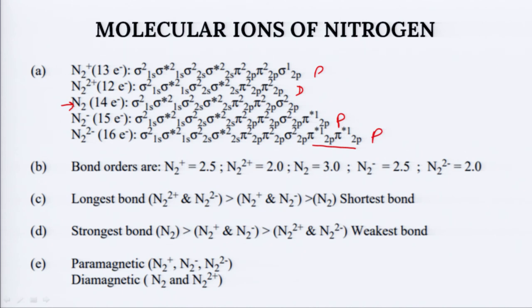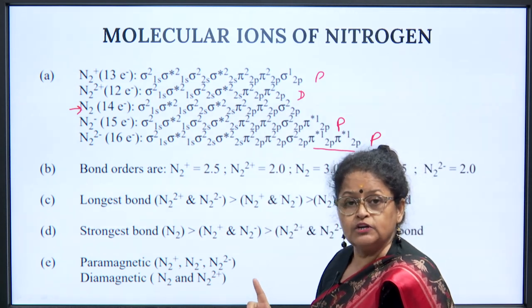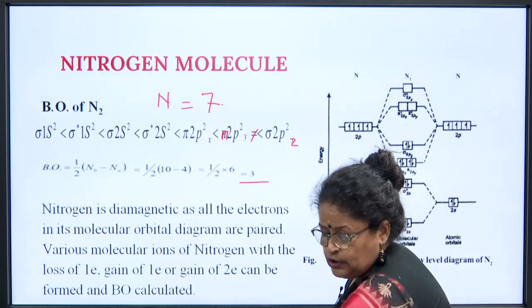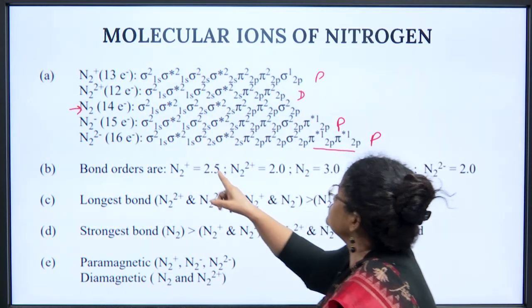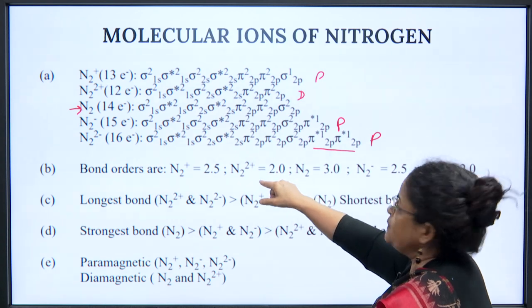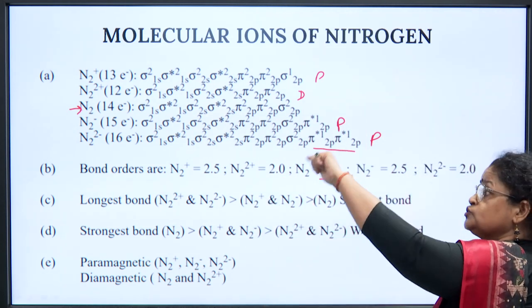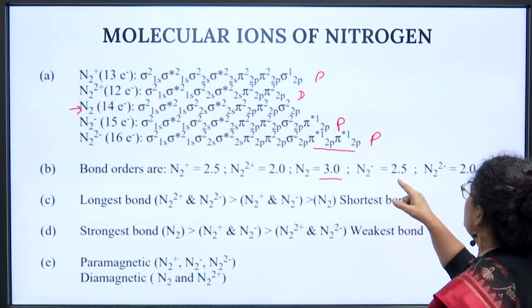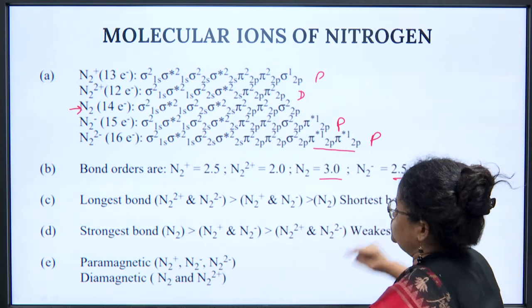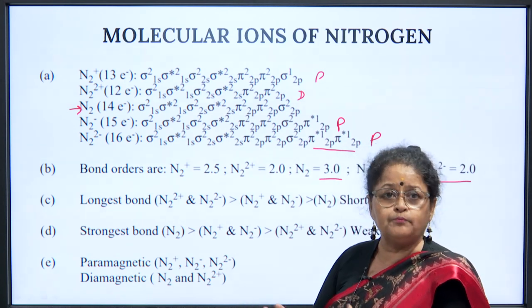Looking at the bond orders of the nitrogen molecular ions: N2 has bond order 3. N2+ (loss of 1 electron): number of bonding minus number of anti-bonding electrons divided by 2 gives bond order 2.5. N2²⁺ has bond order 2. N2 itself has bond order 3. N2⁻ (1 extra electron going to antibonding) has bond order 2.5. N2²⁻ (another electron to antibonding) has bond order 2. Seeing these bond orders, we can arrange them in ascending or descending order of bond strength, bond length, and so on.